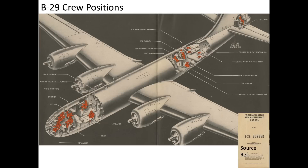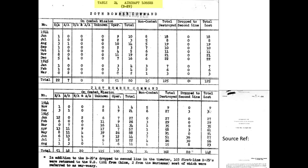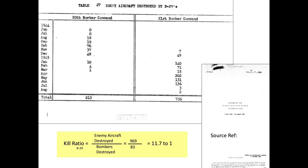B-29 bomber gunner claims were considered as valid as fighters due to gun cameras at the turrets and not flying in formation while on nighttime missions. Non-formation flying would reduce susceptibility of duplicate gunner claims. This September 1945 operations report outlines the number of B-29s shot down by enemy aircraft flying in the 20th and 21st bomber commands. A total of 83 B-29s were shot down in World War II. This chart from the same report lists the number of destroyed enemy aircraft by B-29 bomber gunners at 969. No need to re-evaluate the B-29 bomber gunner claim kills. The B-29 bomber's World War II kill ratio equates to 11.7 to 1.